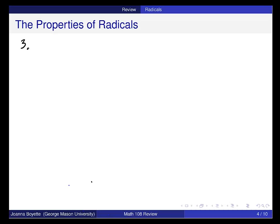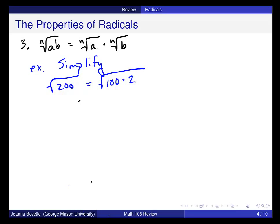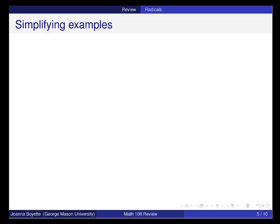The third property that we use is the nth root of ab is equal to the nth root of a times the nth root of b. So an example of using this to simplify the square root of 200. Now when I simplify this, I'm looking for perfect squares that can factor out of this number. 100 is a perfect square, and I can factor 200 as 100 times 2. So this is the square root of 100 times the square root of 2, and that gives me 10 times the square root of 2.